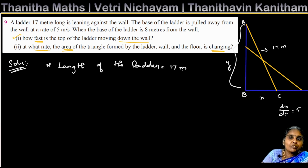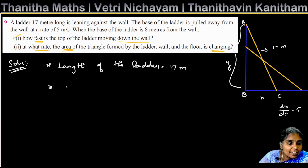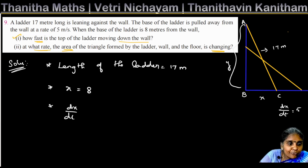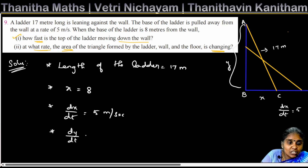The length of the ladder is 17 meters. The base is 8 meters, and the rate dx/dt is 5 meters per second. We are going to find the rate of change of the height dy/dt and the area dA/dt.